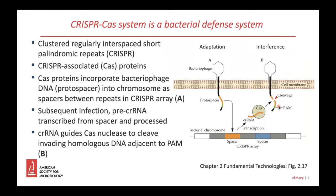Some Cas endonucleases cut both strands of double-stranded DNA, and some cut only one. The target cleavage site must be adjacent to a short sequence known as a PAM, or protospacer adjacent motif. I might ask students why the system has evolved to require a PAM for target cleavage. The answer is that it avoids cleavage of the bacterium's chromosome at the corresponding spacer in the CRISPR array, which is homologous to the invading nucleic acid but does not contain the PAM sequence.